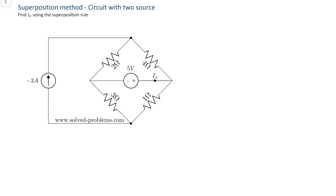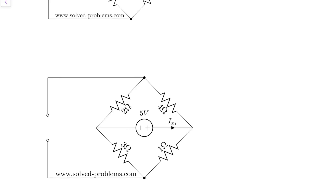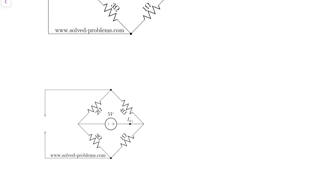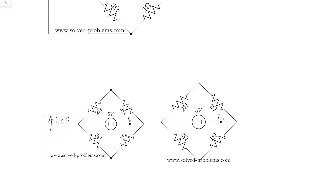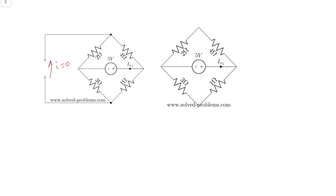We replace the current source with an open circuit, meaning the current passing through those two points is zero. We can simplify the circuit further by getting rid of those two terminals and using a simpler form. That's our circuit. We need to solve it and find the contribution of the 5 volts on IX — we call that IX1.